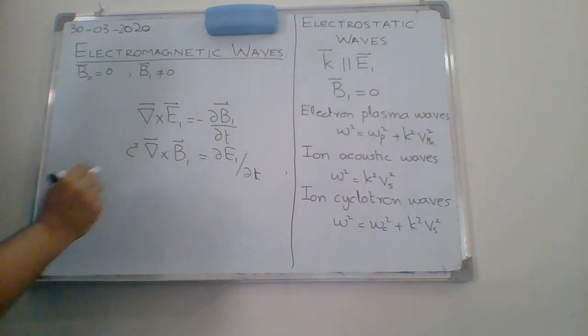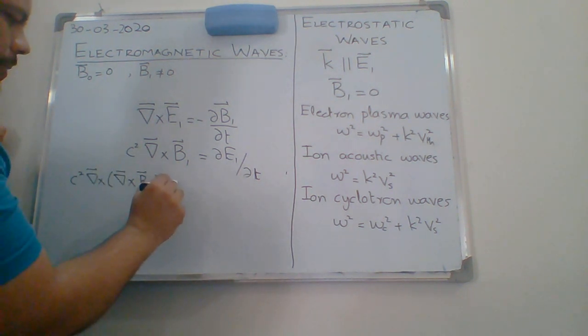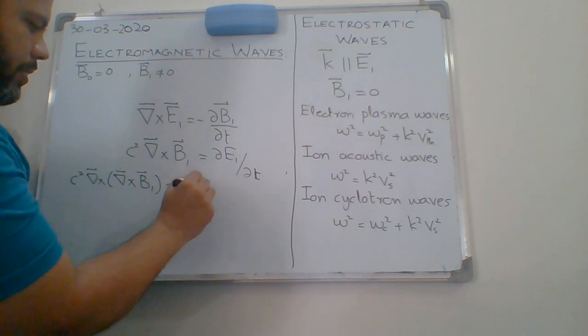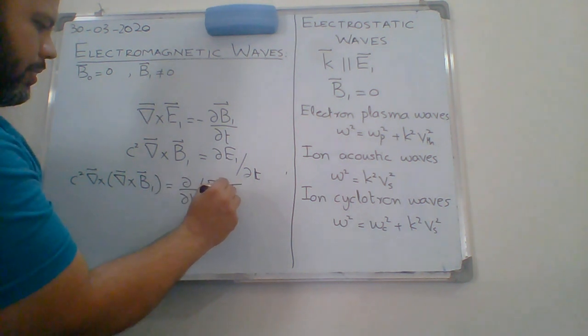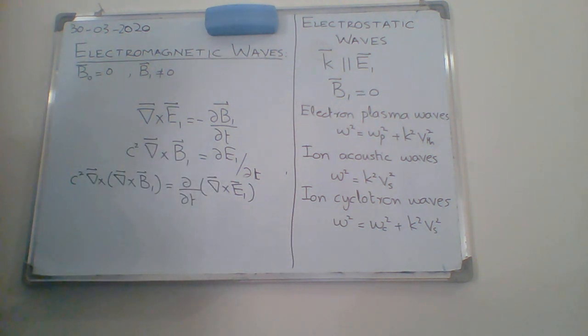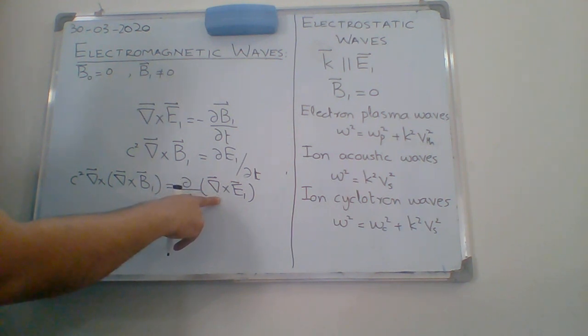So now take the curl of this equation. Why I am taking curl? I am just trying to solve these two equations of the electromagnetic waves in vacuum. So now substitute the value of del cross e1 from this equation here and then I will get...